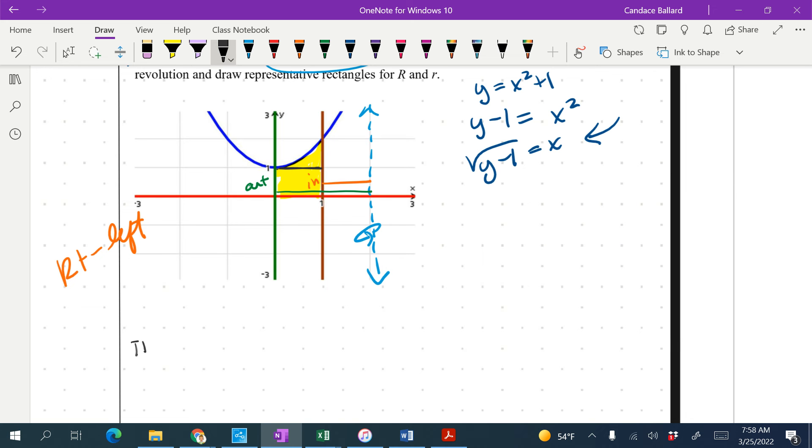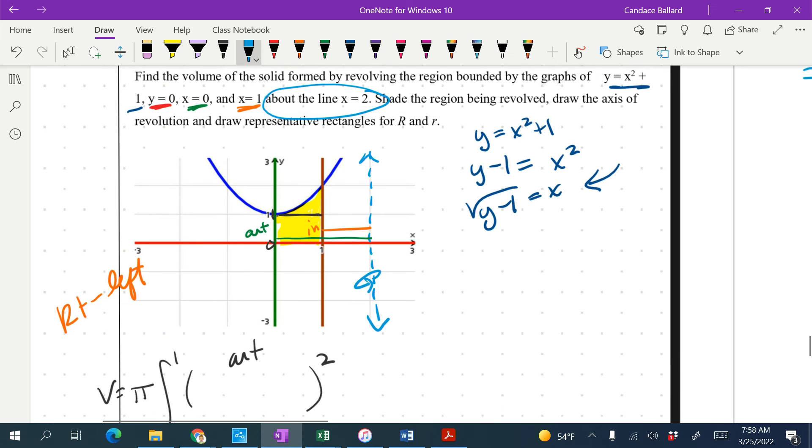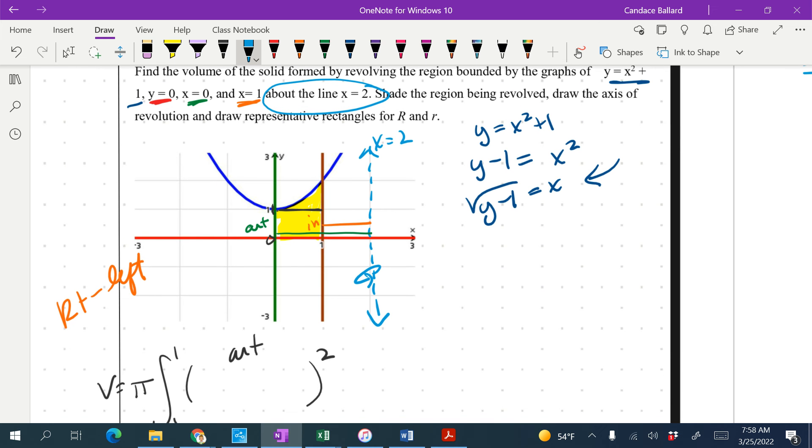So we're going to go volume equals pi. We're going in the y direction. We're going from zero to one. This is my outer function. My right is the axis of revolution. And we know our axis of revolution is x equals 2. So I'm going to start with 2 minus my outer function, which is the green, which is zero.